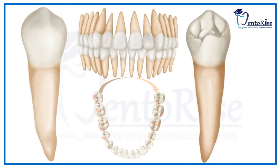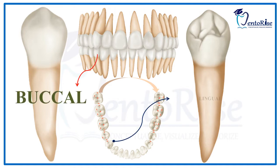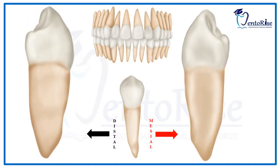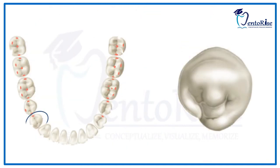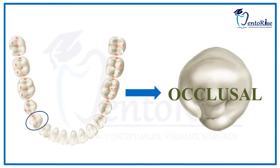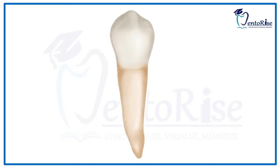The entire dental anatomy of permanent mandibular 1st premolar can be dealt in 5 aspects: the buccal aspect, the lingual aspect, the mesial aspect, the distal aspect and the occlusal aspect. In this video, we will be dealing with the buccal and the lingual aspect.